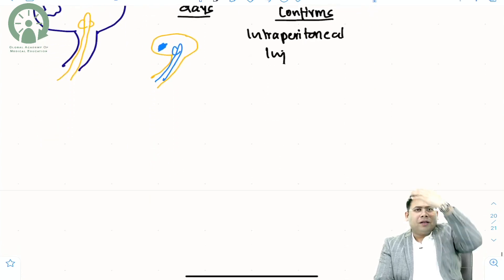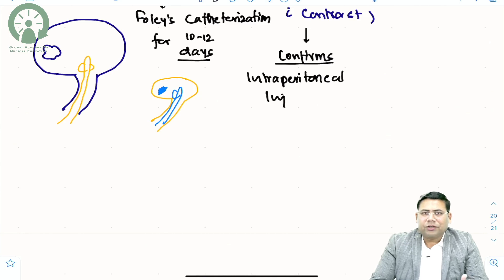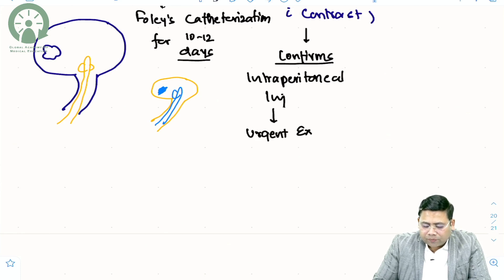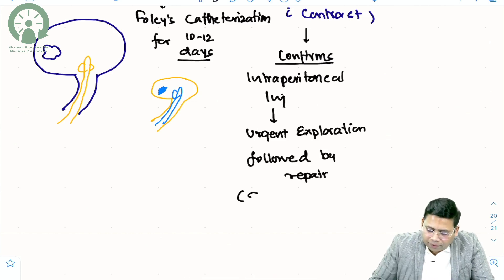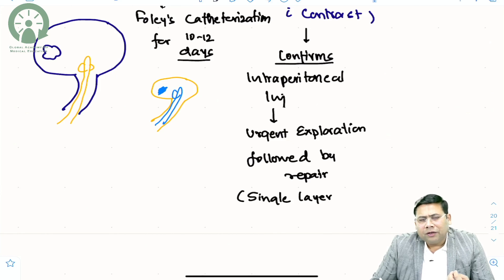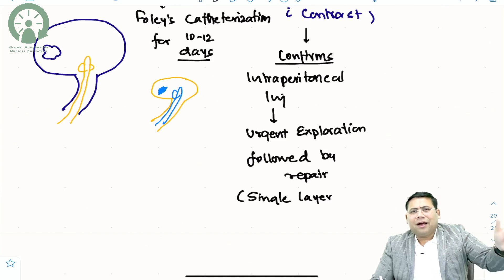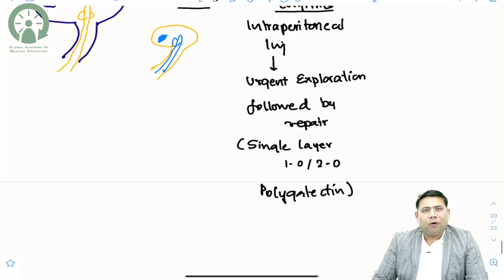The problem is with intraperitoneal leak. When there is an intraperitoneal leak, there will be chemical peritonitis of the abdomen, leading to bacterial contamination and bacterial peritonitis. So for intraperitoneal injury, you need urgent surgical exploration followed by repair. The bladder is repaired in a single layer using 1-0 to 2-0 polyglactin suture — in laparoscopic surgery we use 1-0 Vicryl, and in open surgery 2-0 Vicryl.